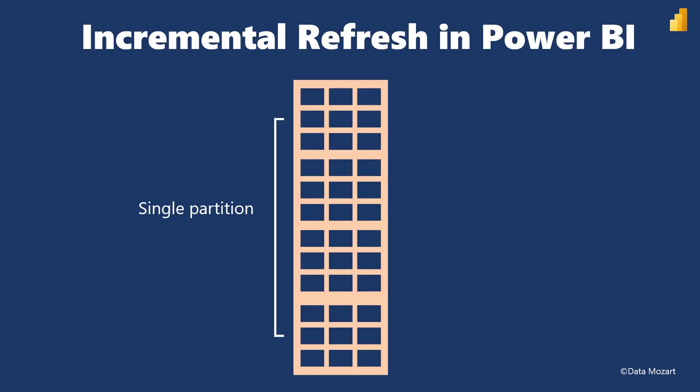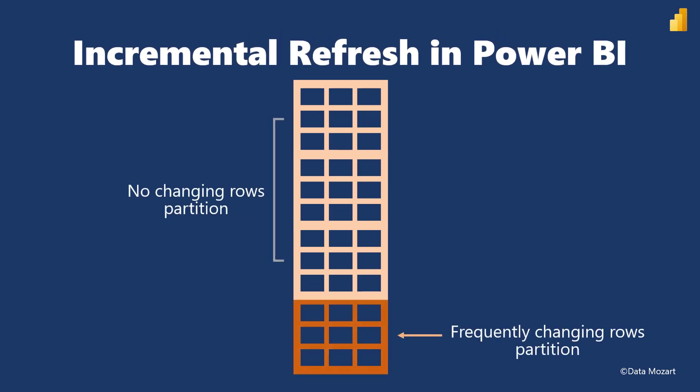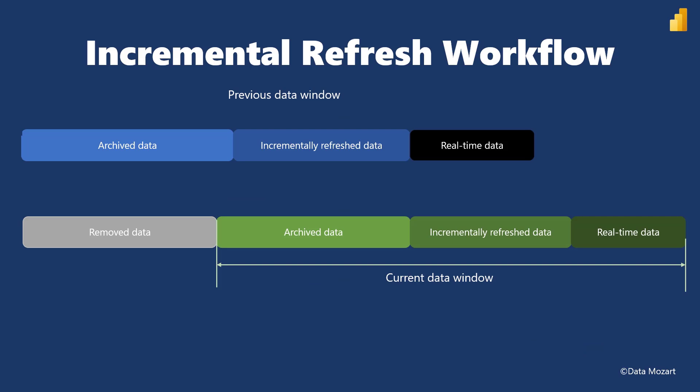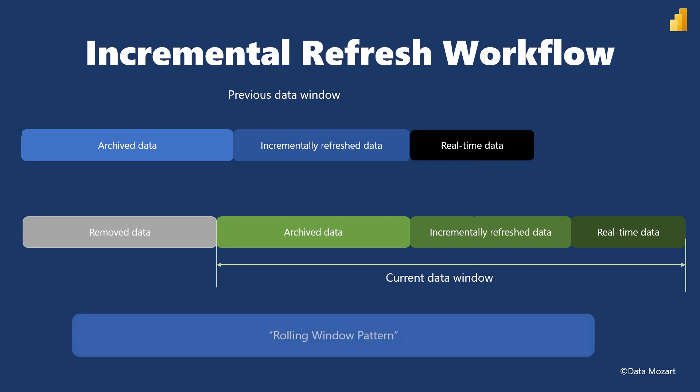Let's see how Incremental Refresh works in Power BI. Once you publish your data model to the Power BI service, each table contains one single partition holding all the rows, which for large tables can make data refresh overwhelming. When you configure Incremental Refresh, Power BI will automatically partition your table. One partition will contain data that has to be refreshed frequently, while the other partition holds rows that are not changing. The window is rolling, and data that was considered real-time in the previous window now becomes part of the Incremental Refresh partition. This ongoing process is known as the rolling window pattern.